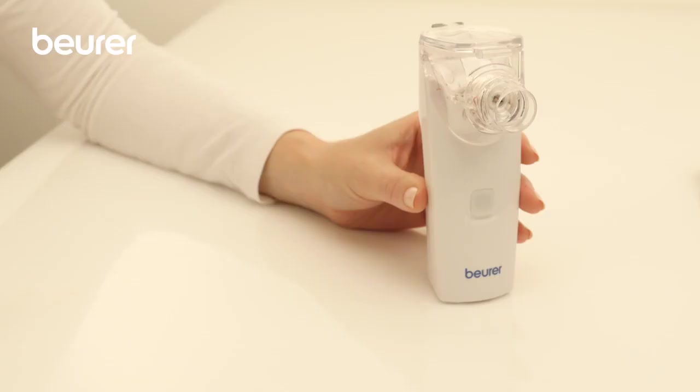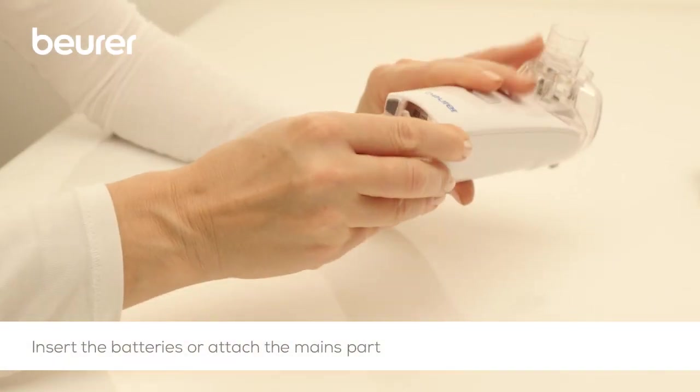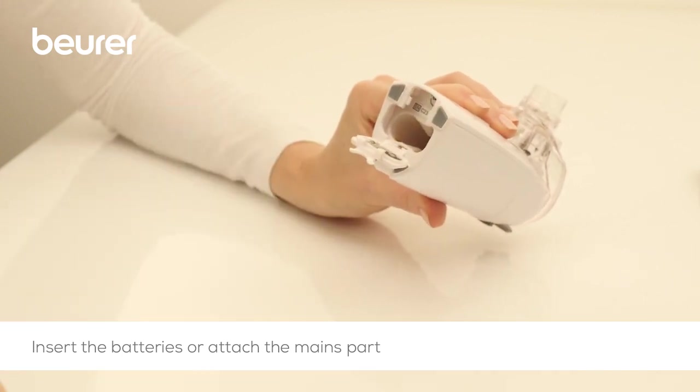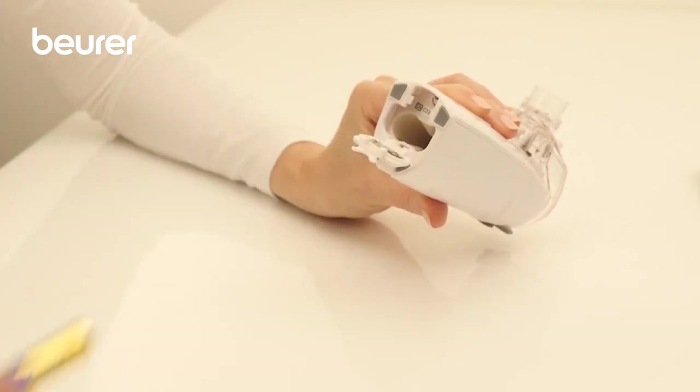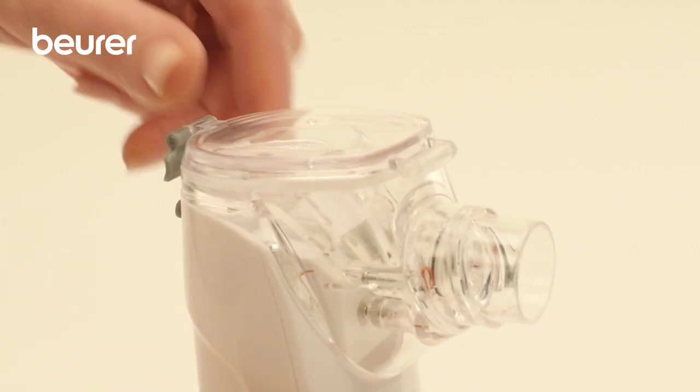Insert the supplied batteries into the device. The nebuliser can also be operated with a mains part. Now unlock the fastening clip of the medication container and open the container.